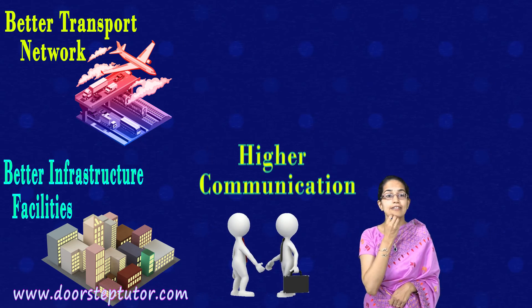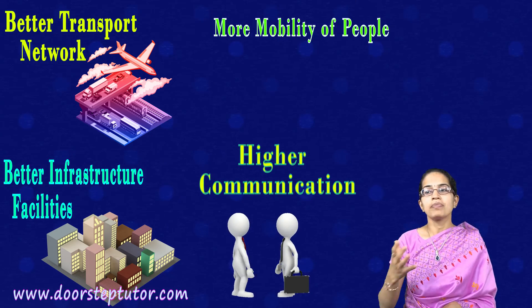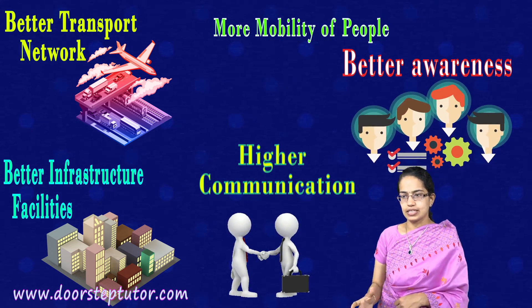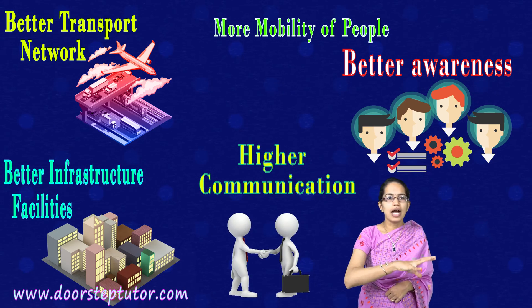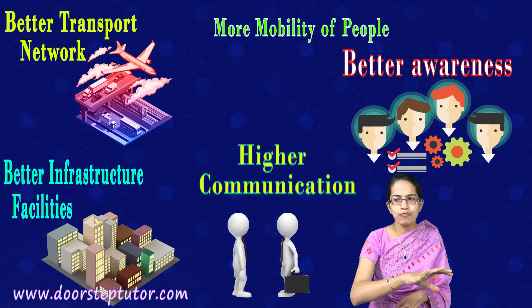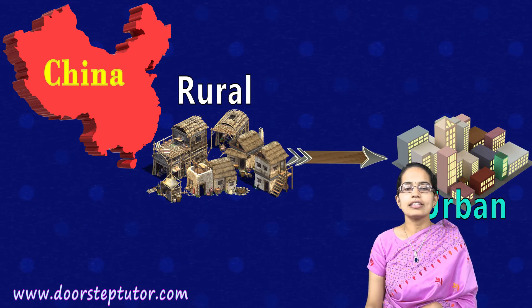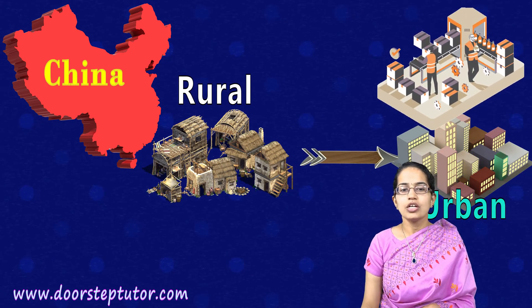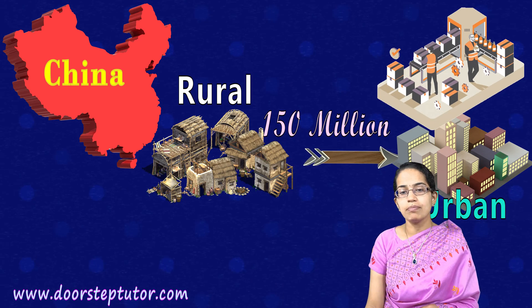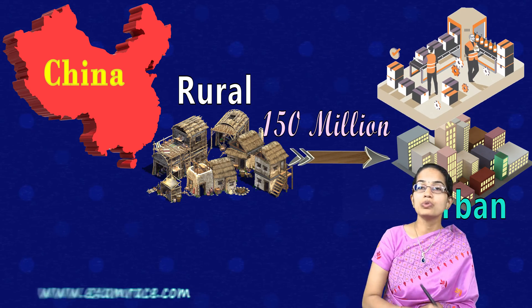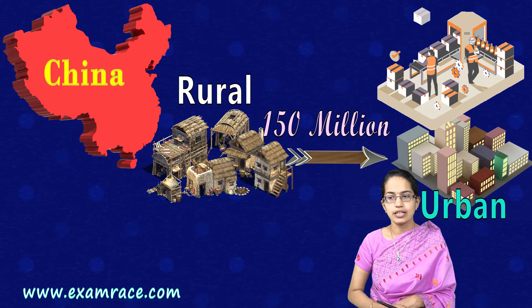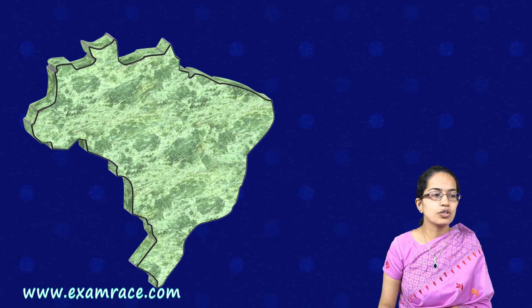There is higher communication, more mobility of people, and better awareness. In China, for example, there is a huge amount of rural-to-urban migration, mainly to factory floors. Nearly 150 million people are moving from rural areas to urban areas in China.